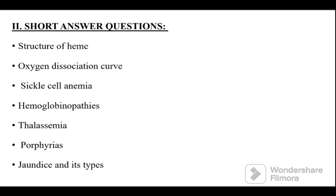And short answer questions, that is essay cues: structure of heme, oxygen dissociation curve, or we can say structure of hemoglobin as full, and then sickle cell anemias, hemoglobinopathies, thalassemias, porphyrias, and jaundices and its types are potential short answer questions.